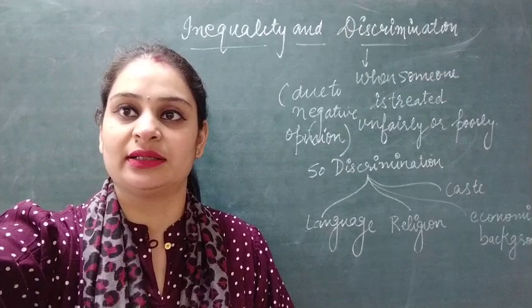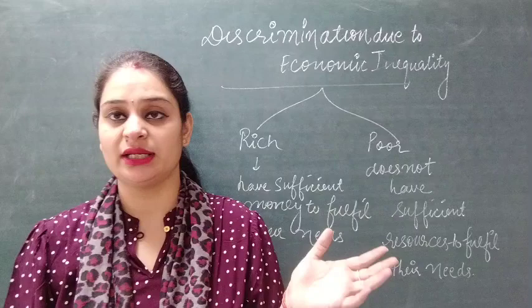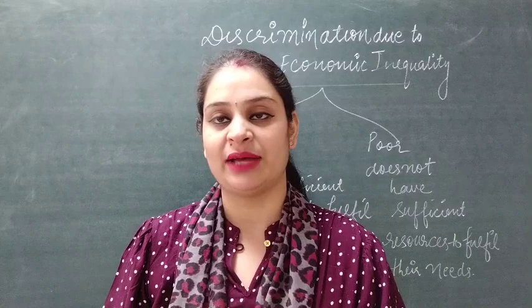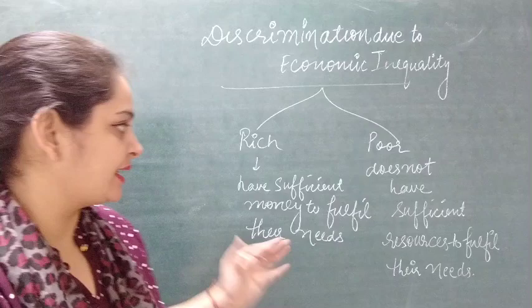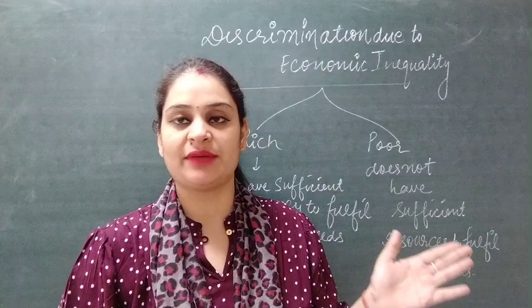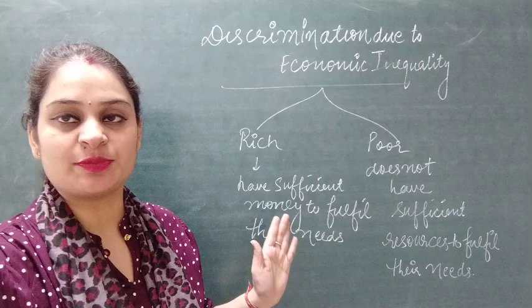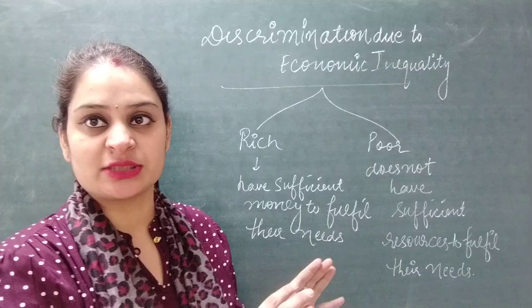Now we discuss discrimination on the basis of economic inequality. We categorize economic inequality on the basis of resources a group of people have. When a group has available resources to fulfill their own needs, we categorize them in the rich section of society. When a group does not have enough resources to meet their basic needs, we categorize them in the poor section of society.